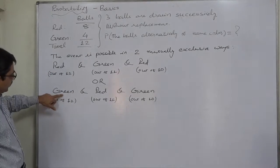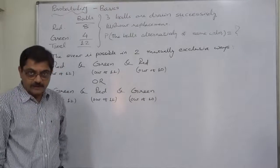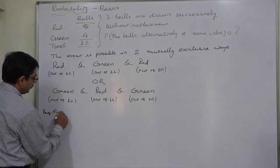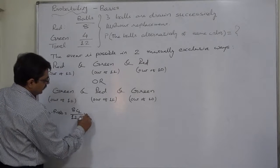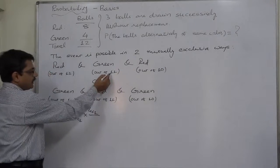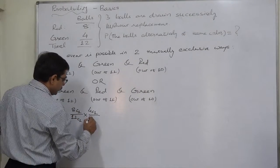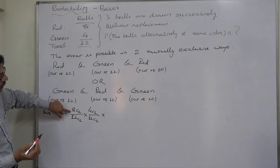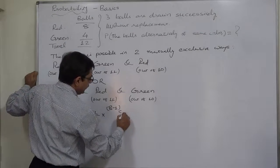The first green ball comes from 4, so the second green comes from 4 minus 1 = 3. Now let us calculate: the required probability for the first case is 8C1 upon 12C1, multiplied by 4C1 upon 11C1, multiplied by 7C1 upon 10C1 — because after drawing one red, the red count reduces to 7.